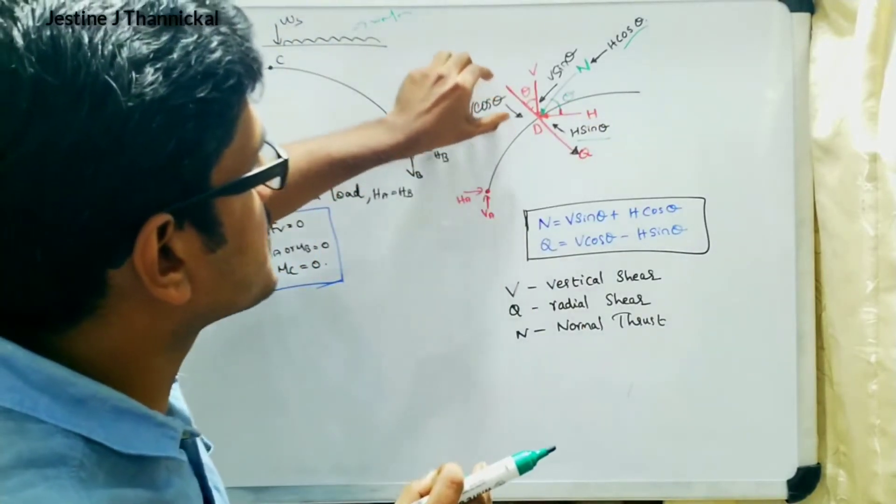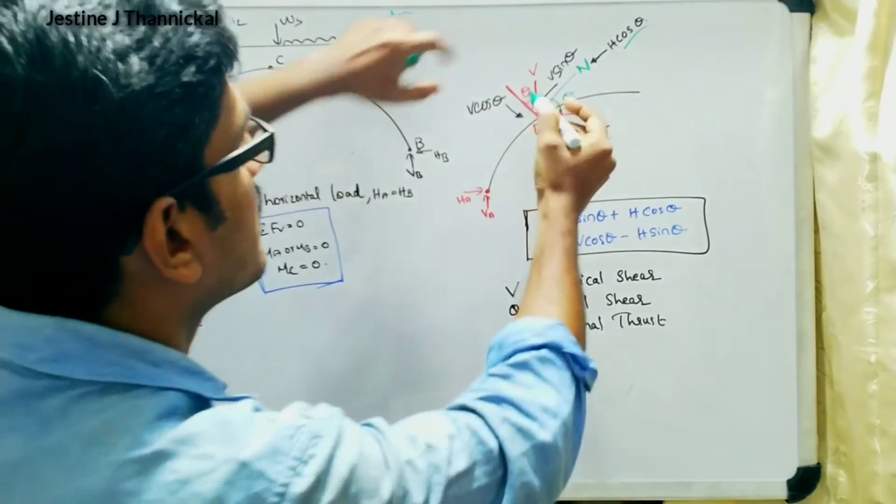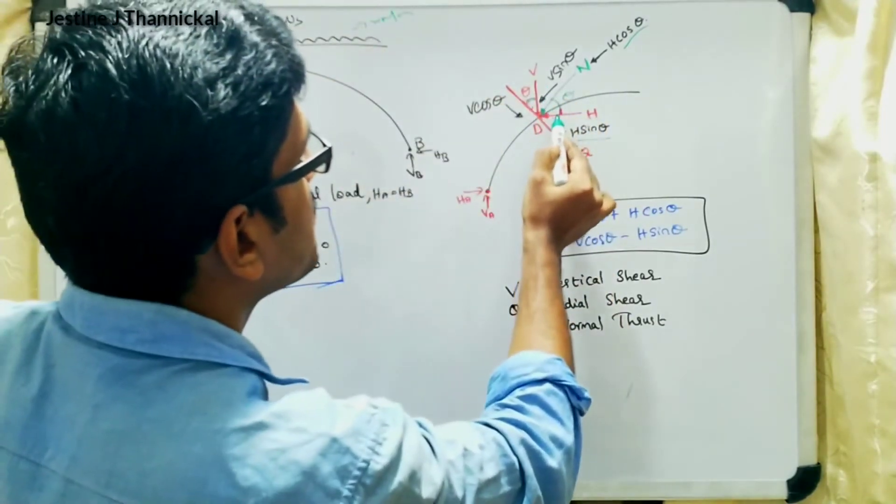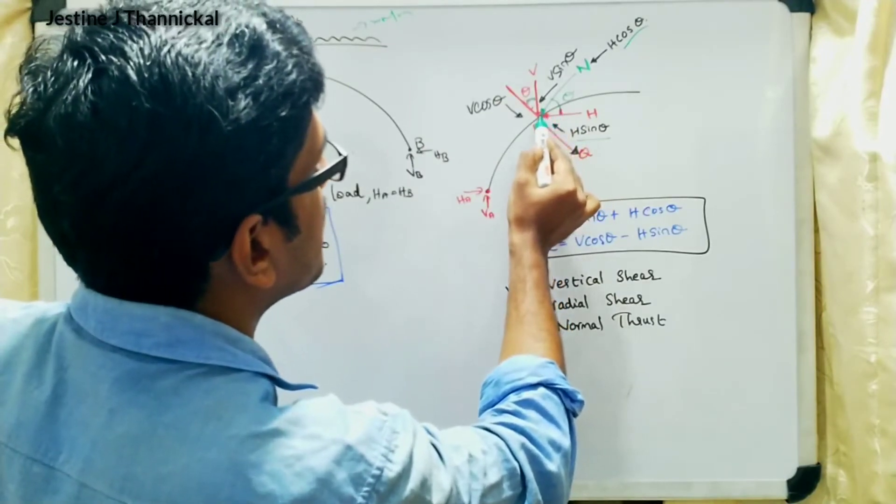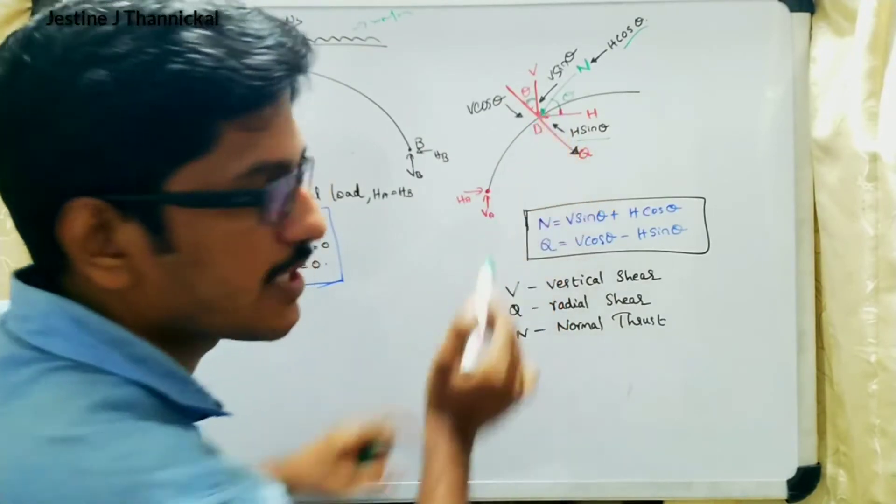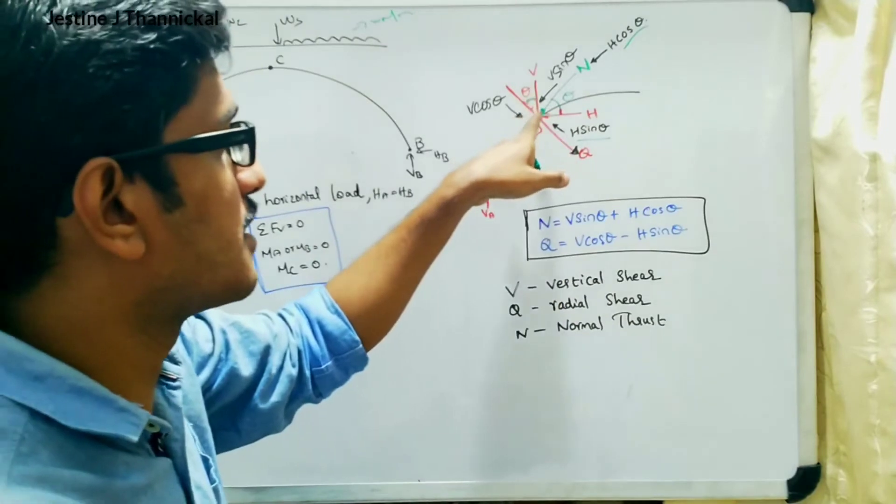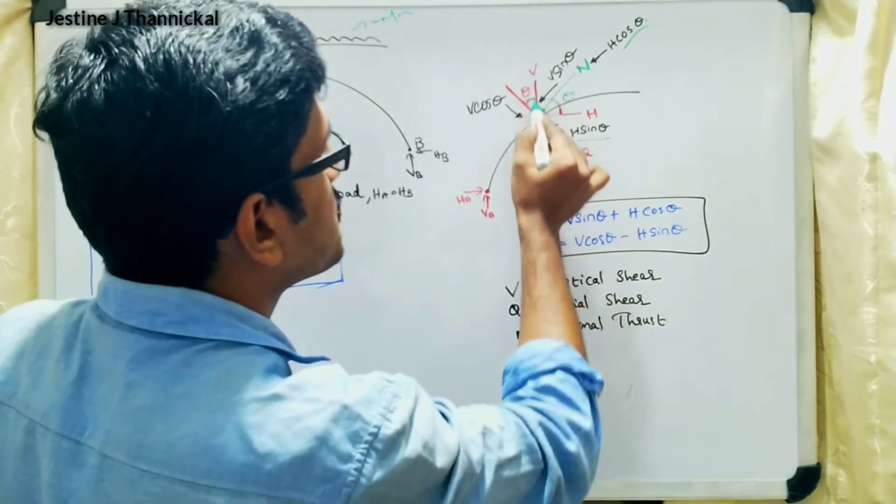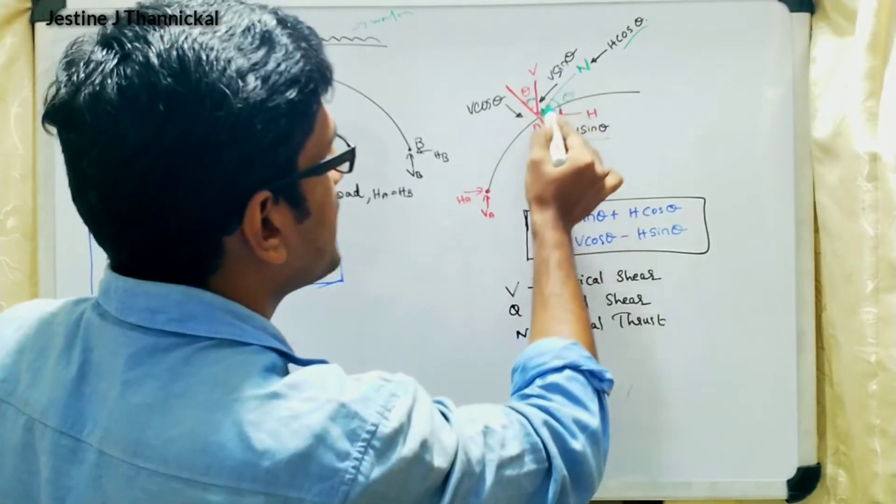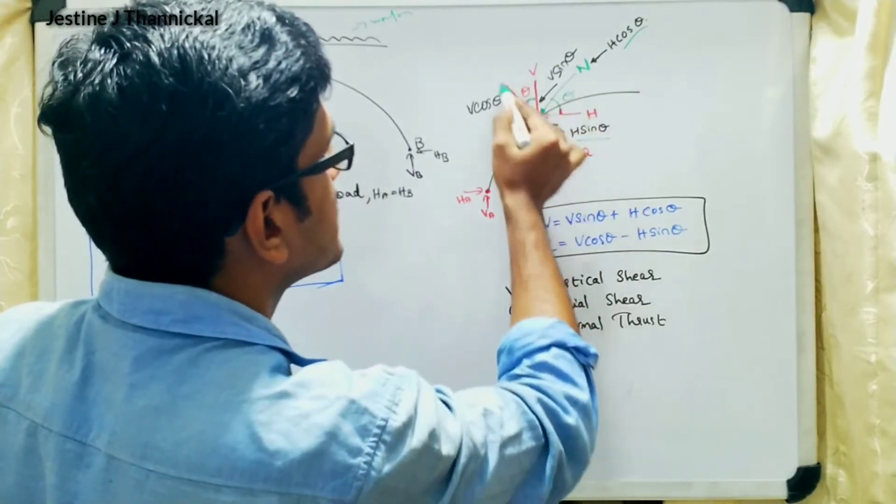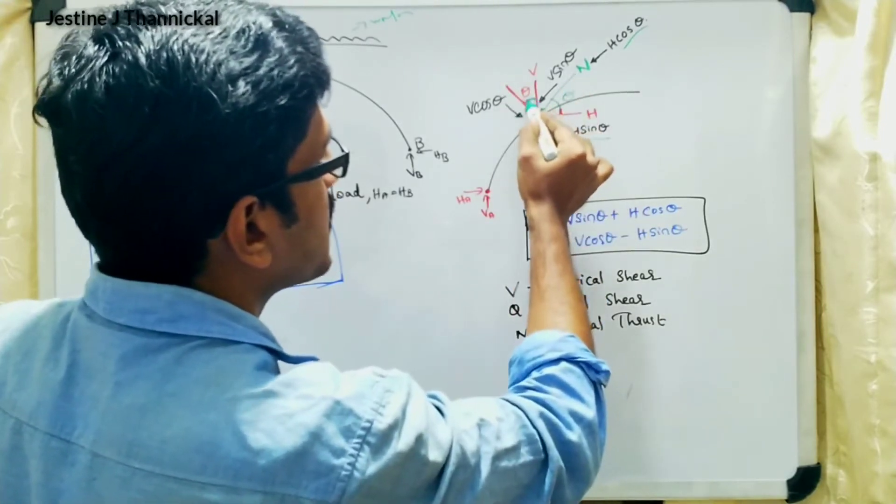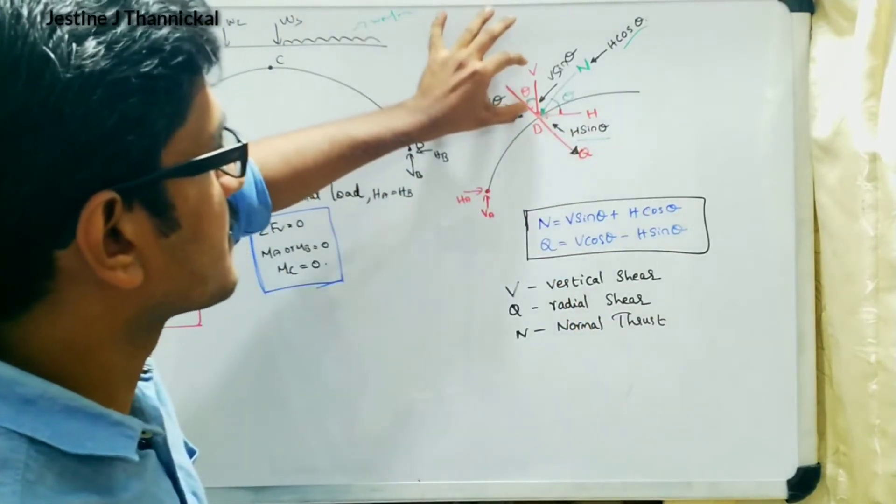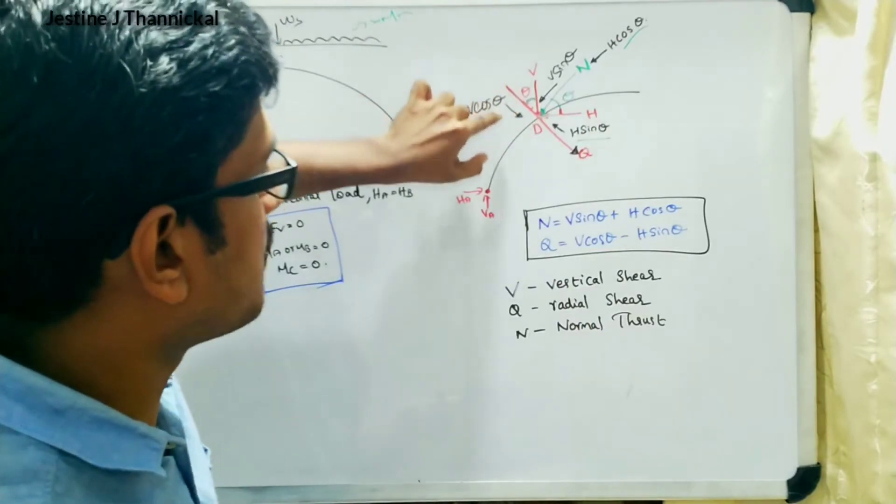Then similarly we can split here also. This angle, how is this theta going to happen? This is going to be perpendicular here. This is a mathematical phenomenon operating here. If this is going to be perpendicular to V and capital N is perpendicular to Q, then the included angle is going to happen as theta.